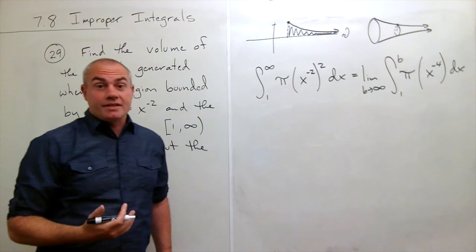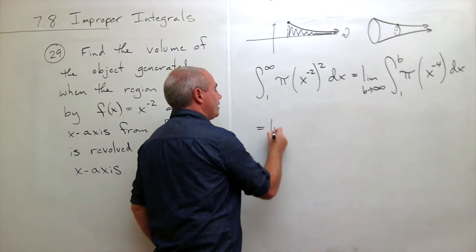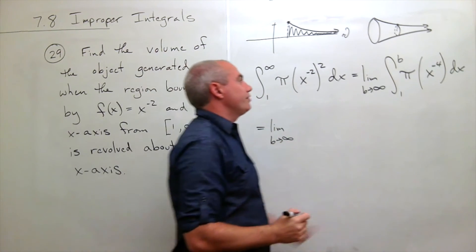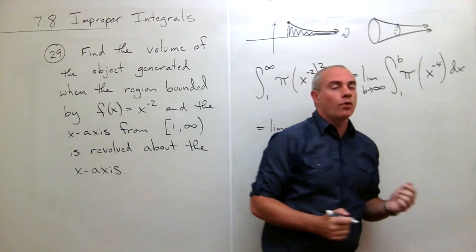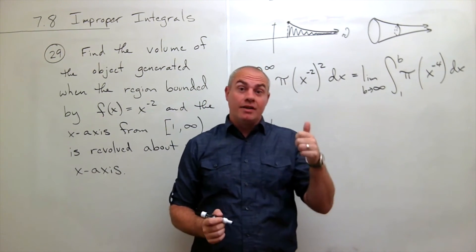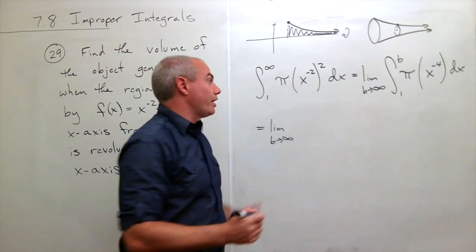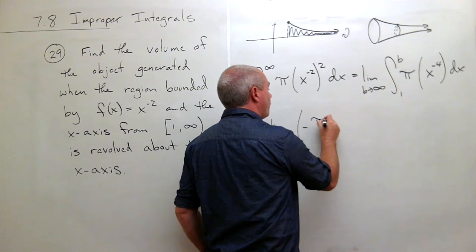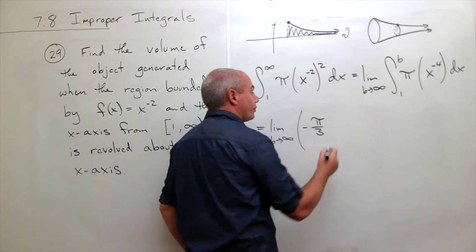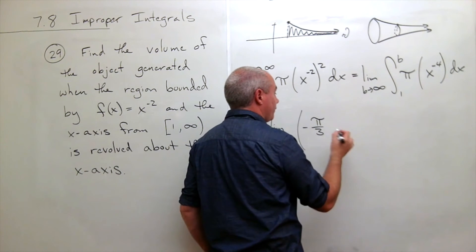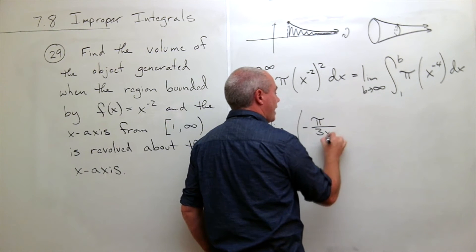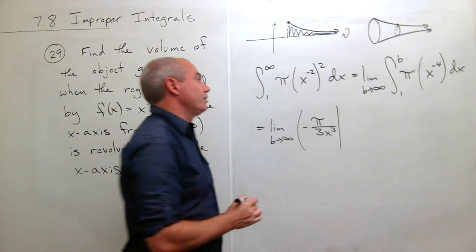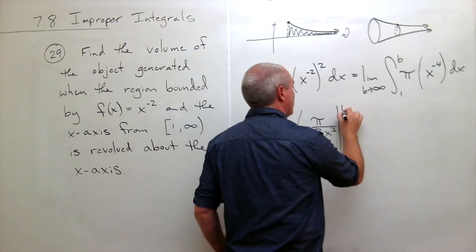All right, let's take an antiderivative here. I still have my limit as b goes to infinity sitting out front. And the antiderivative of x to the minus 4 is x to the minus 3 divided by negative 3. So the way I could write that is this is negative pi over 3, because I needed to divide by negative 3, x to the negative 3. So x to the negative 3 is an x cubed on the bottom, and that's going to be evaluated from 1 to b.